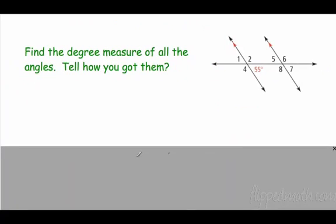So let's take a look here. Find the degree measure of all the angles. Tell how you got them. So, well, let's see here. If these are parallel, this corresponds to this. So 55 and seven are the same. So this is 55 degrees as well.